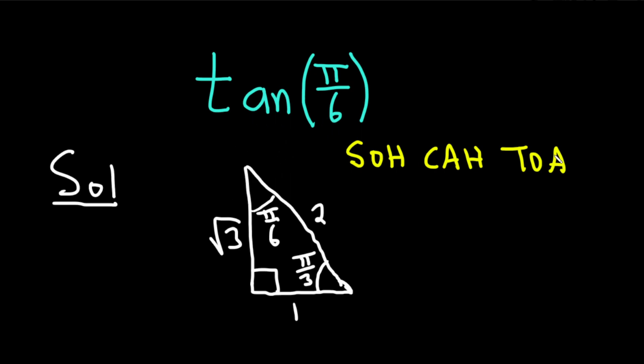And so for tangent, we have O over A. So tangent would be O over A. O stands for opposite, and A stands for adjacent. And if you're curious, H stands for hypotenuse. So sine is opposite over hypotenuse, cosine is adjacent over hypotenuse, tangent is opposite over adjacent.